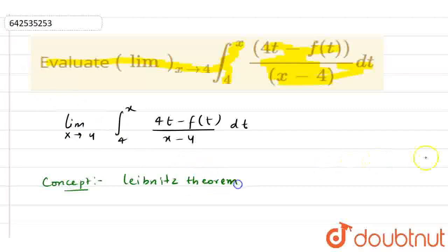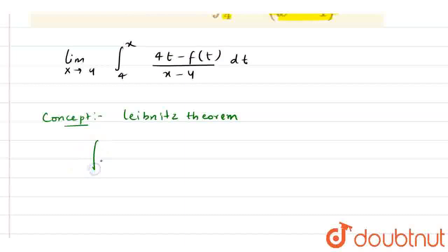What does this theorem say? Whenever we have a function with limits phi(x) to omega(x) and we have f(t) dt, then I can write it as f(omega(x)) multiplied by omega'(x)